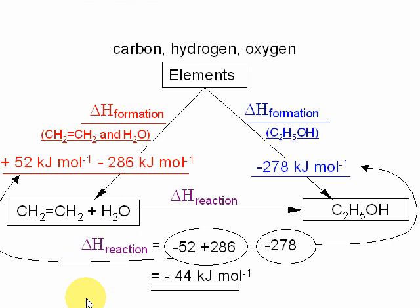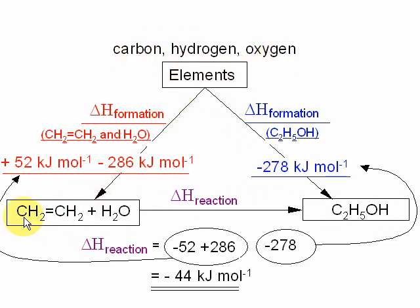Here is the Hess cycle for that example. There is ethene with water, and it's this reaction enthalpy which we don't know, to form ethanol as the product. However, what we do know are the enthalpy changes going from the elements to the compounds on either the reactant or product side — those elements being carbon, hydrogen, and oxygen. We know that to go from carbon, hydrogen, and oxygen to ethene, that would be the enthalpy of formation of ethene, which is plus 52 kilojoules per mole. And to form the water from the elements is also given — that's delta H formation of water: minus 286.